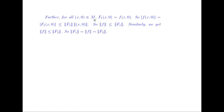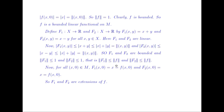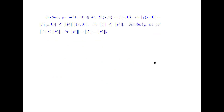For all (x, 0) ∈ M, |F(x, 0)| = |F₁(x, 0)| ≤ norm(F₁) · ‖(x, 0)‖, which gives norm(F) ≤ norm(F₁). Similarly norm(F) ≤ norm(F₂). Combined with norm(F₁) ≤ norm(F) and norm(F₂) ≤ norm(F) from before, we conclude norm(F₁) = norm(F) = norm(F₂) = 1. This shows that the Hahn-Banach extension is not unique, as both F₁ and F₂ are distinct norm-preserving extensions. Thank you.